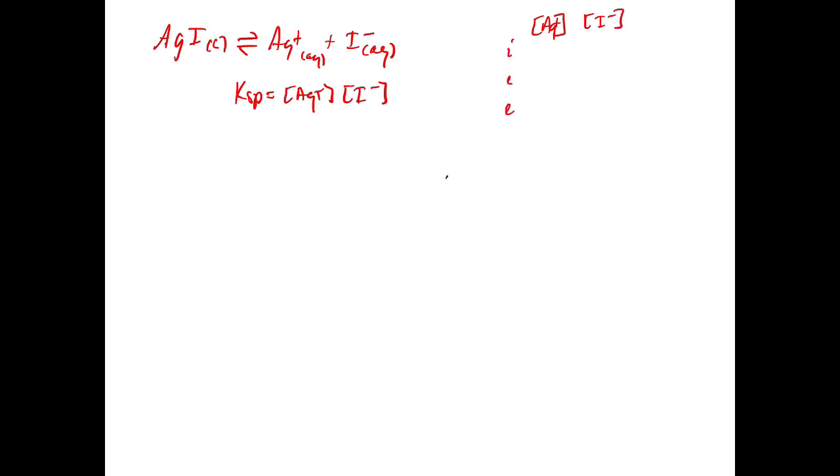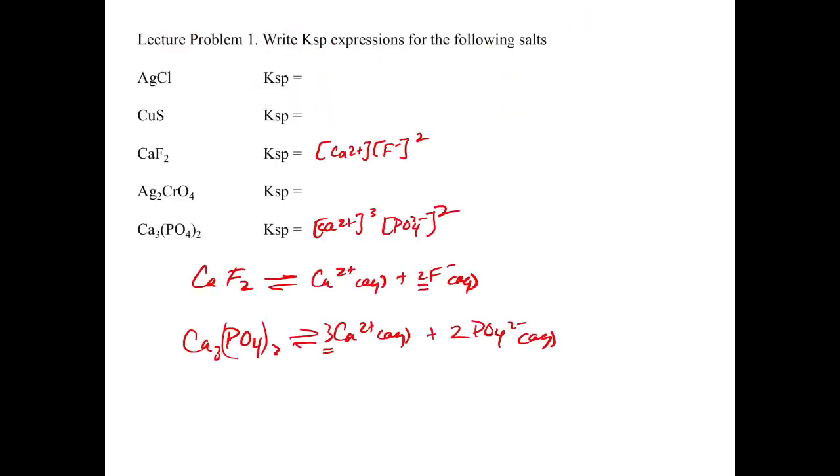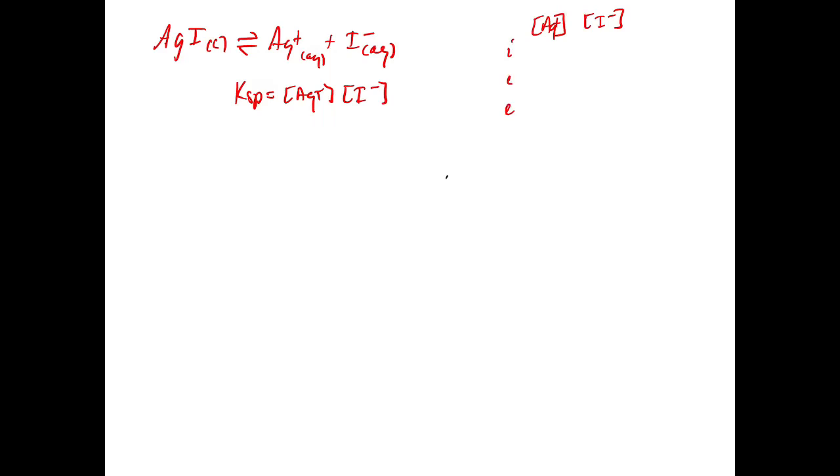And then our concentration initially, so when we first dissolve the silver, we're going to start with zero molar and zero molar, right? We're going to put the silver iodide into the solution, and at that point, it hasn't dissolved.